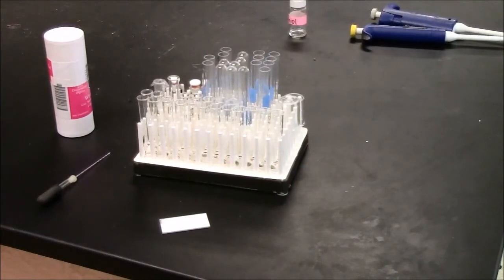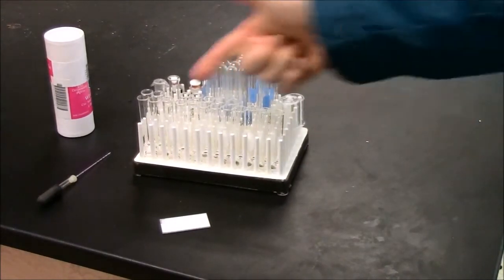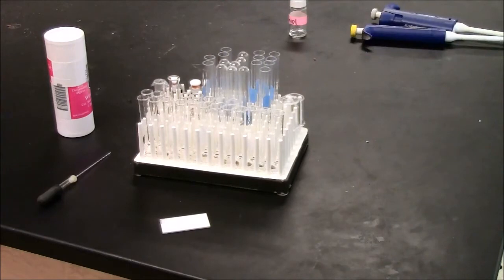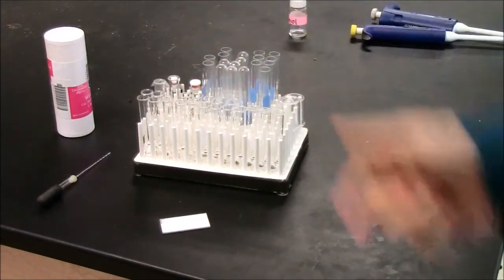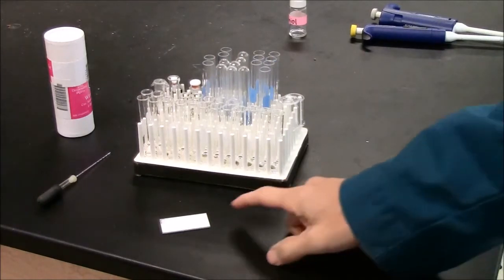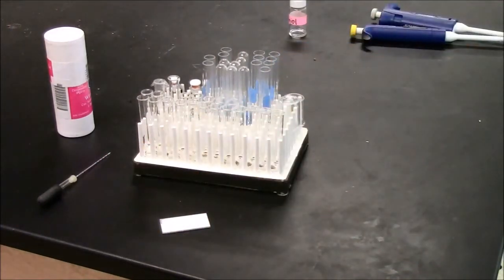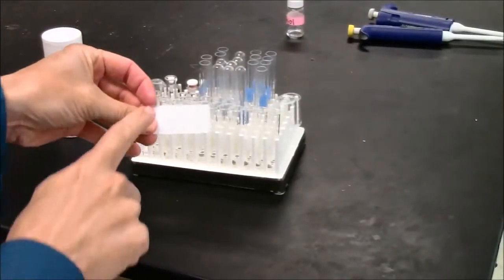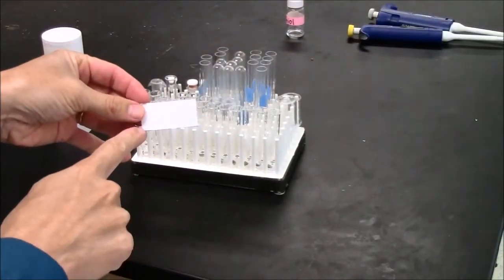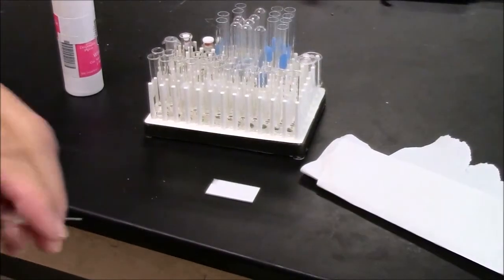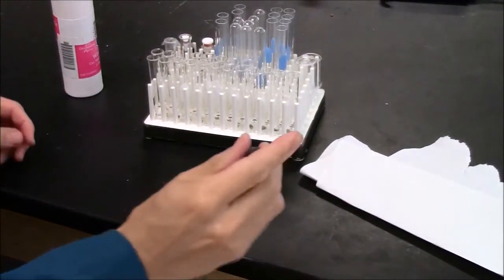After running my column, or even during the running of the column, I'm collecting many fractions and I want to be able to do a quick screen. Is there anything in any of these tubes of interest? I can do this with one plate, one microcap. On the plate, I put numbers 1, 2, 3, 4, 5, 6, 7, 8, all the way up to 15. I'm going to use one microcap.